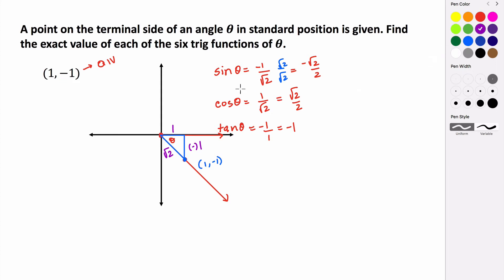So now let's find the reciprocal functions. We have the reciprocal of the sine, which is the cosecant of θ. Now one thing that's kind of nice, we could take the reciprocal of -√2 over 2, but we know that this is equivalent to -1 over √2. So I'm actually going to use this reciprocal. So that's going to be √2 over -1, which just simplifies to be -√2.